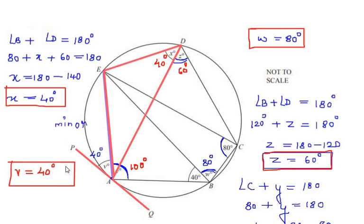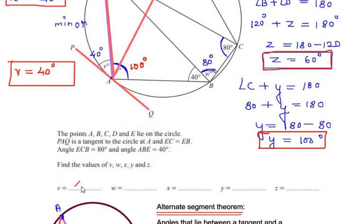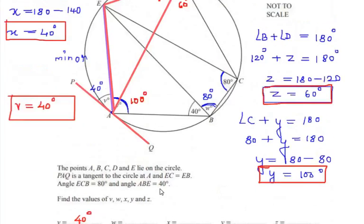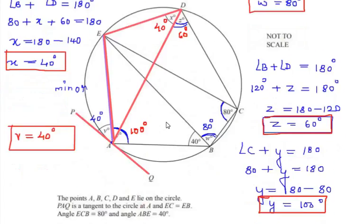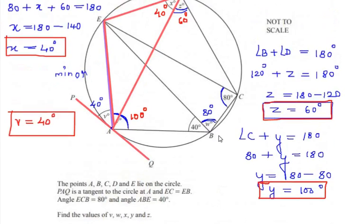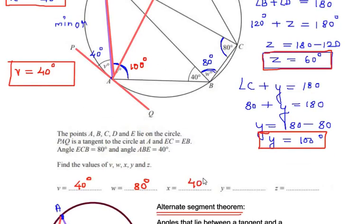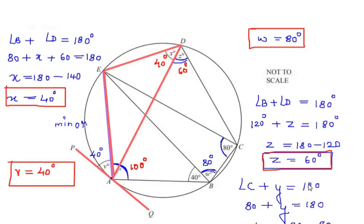So we have found all the angles. V is 40 degrees using the alternate segment theorem. W is 80 degrees using the isosceles triangle property. X is 40 degrees by the cyclic quadrilateral theorem. Y is 100 degrees by the cyclic quadrilateral theorem. And Z is 60 degrees, also found by the cyclic quadrilateral theorem. I hope you have understood all the steps and liked the video. Please like, share and subscribe to my channel. Thank you for watching.